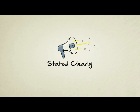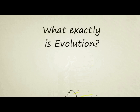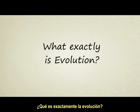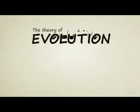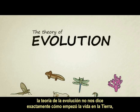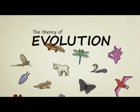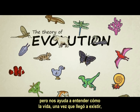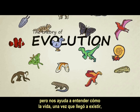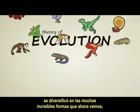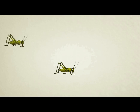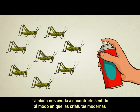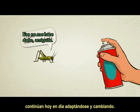Stated Clearly presents: What exactly is evolution? In biology, the theory of evolution doesn't tell us exactly how life began on Earth, but it helps us understand how life, once it came into existence, diversified into the many incredible forms we see now and in the fossil record. It also helps us make sense of the way in which modern creatures continue to adapt and change today.